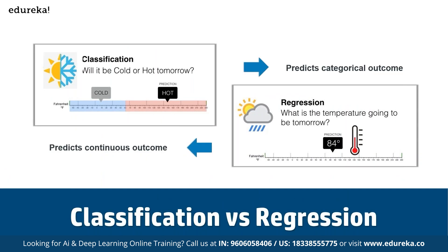We have two different types of classification: binary classification and multi-class classification. Comparing classification with regression: classification predicts categorical outcomes, such as whether it will be hot or cold tomorrow, whereas regression focuses on predicting continuous outcomes, such as what the exact temperature will be tomorrow.